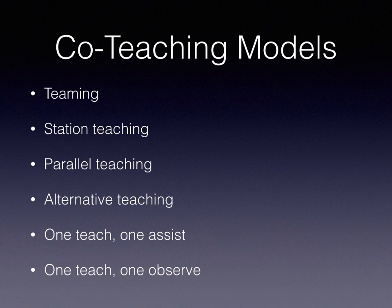The other model is One Teach, One Assist — the most used model, but also the most ineffective, because that means one teacher is teaching while the other is just walking around and helping.